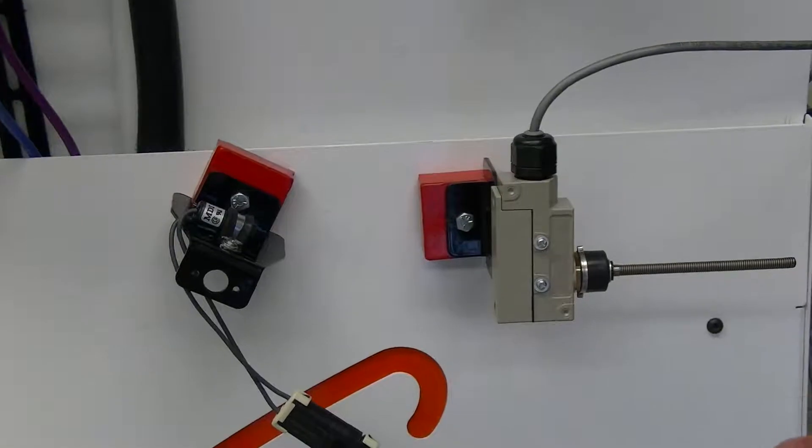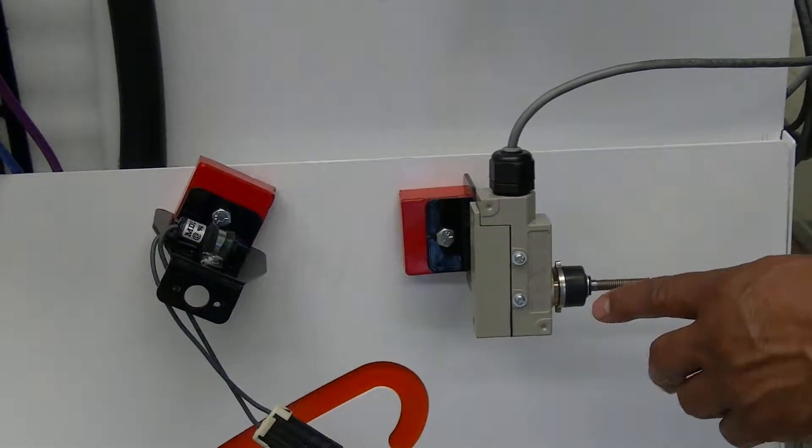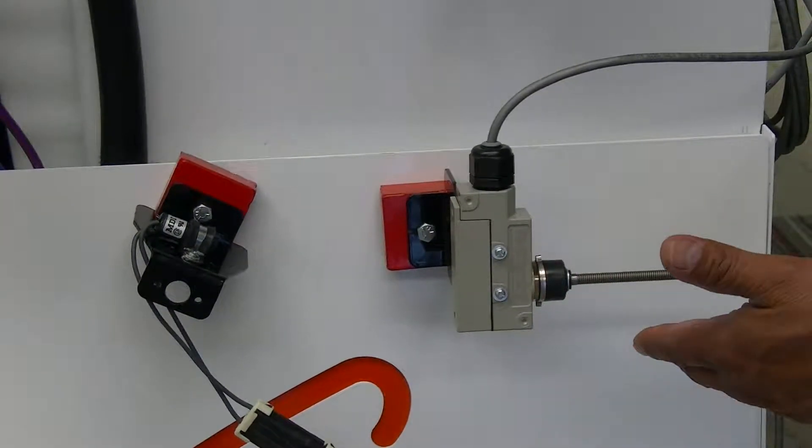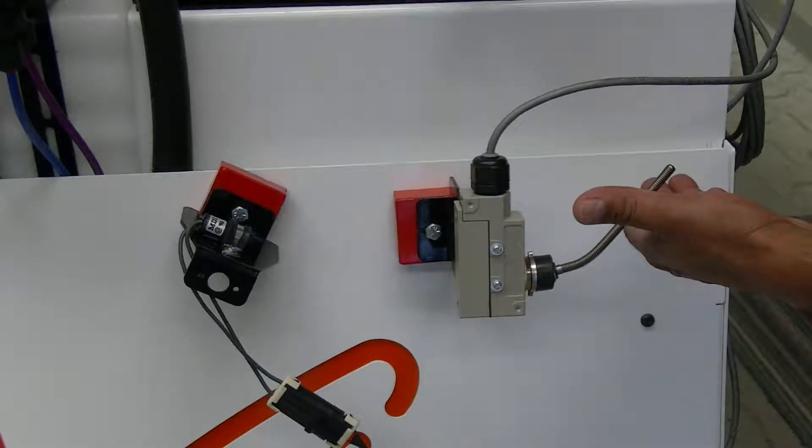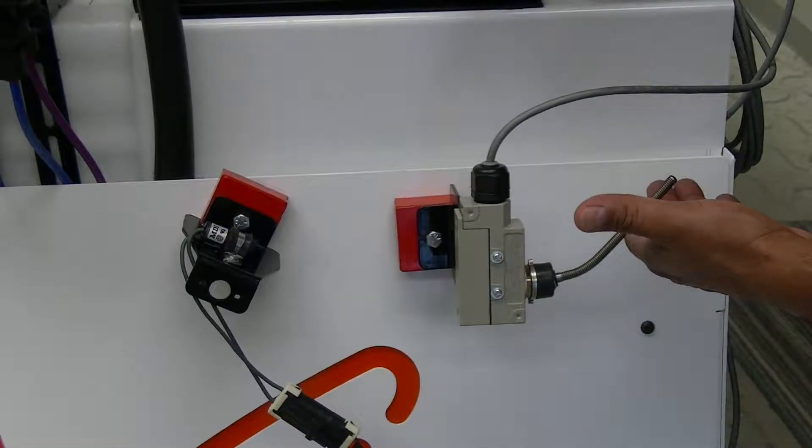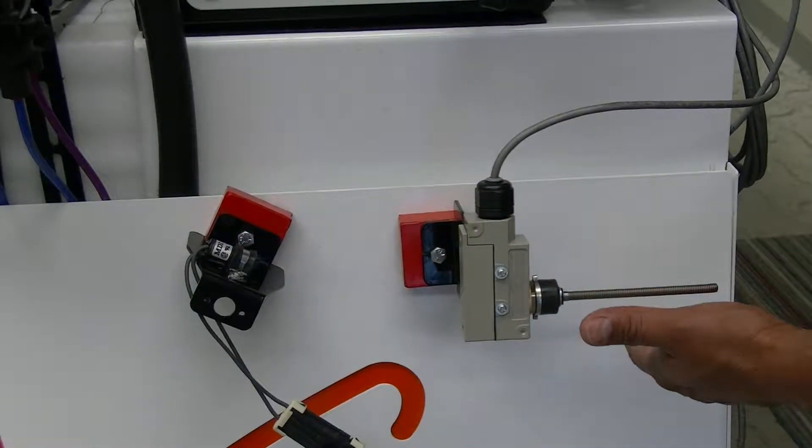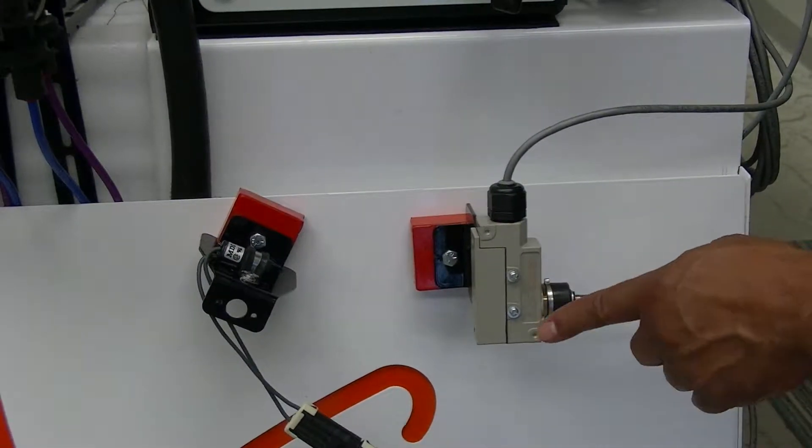They both do the same exact thing in that they will stop the system from running. So right now our controller is running, pumps are running. When you use a whisker switch, all you need to do is set it up so that when the implement lifts and hits the whisker, the system goes into hold, simulating you turning around in the field or just lifting your planter. But then when you lower the planter down, the pump re-engages again.